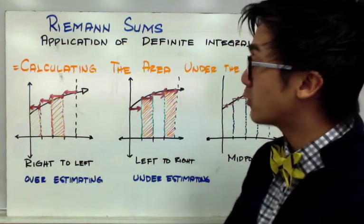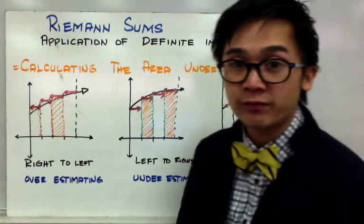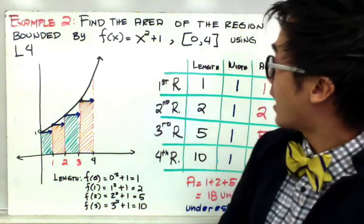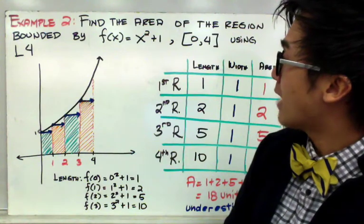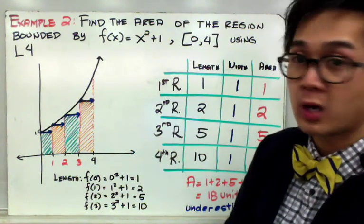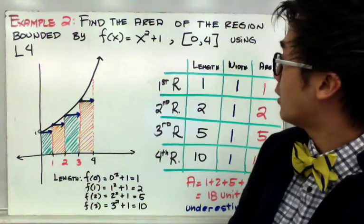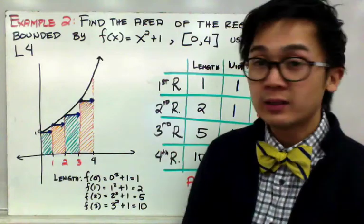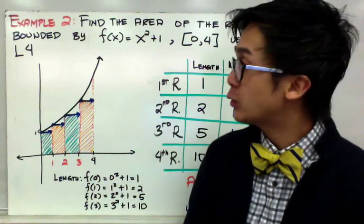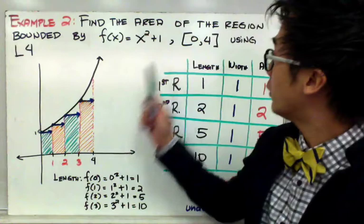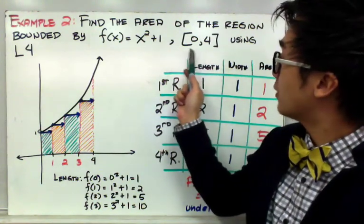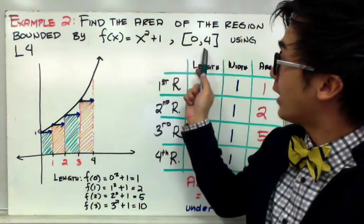I'm going to show you examples of how to use each method on one function. For my first example, I have to find the area of the region bounded by f(x) = x² + 1, given the interval from 0 to 4, using L4. L4 is our code for the left-to-right method using four rectangles. From the interval 0 to 4, we divide it into four rectangles to find the area under the curve.